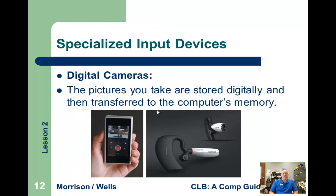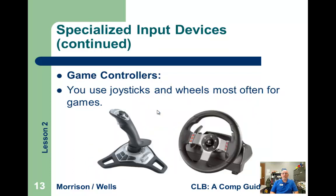Digital cameras connect either through Bluetooth, wireless, or with a cable. You can take pictures, store them, and transfer them to the computer's memory on the hard drive or other storage device. Game controllers — joysticks and wheels — and the Wii, which is its own specialized input device for whatever sport or game you're playing.